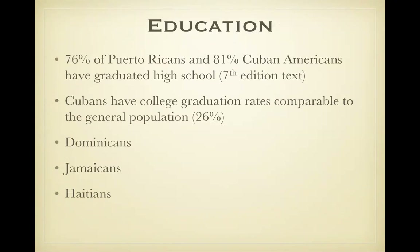Education. These numbers have actually increased. 76% of Puerto Ricans and 81% of Cuban Americans have graduated high school. Cubans have similar college graduation rates compared to the U.S. The new textbook does not have any statistics on Dominicans, Jamaicans, or Haitians. However, a previous textbook discussed about 50% of Dominicans with high school graduation, 75% of Jamaicans, and 62% of Haitians. I will not ask you any of these numbers on a quiz — they're just for your interest and information.